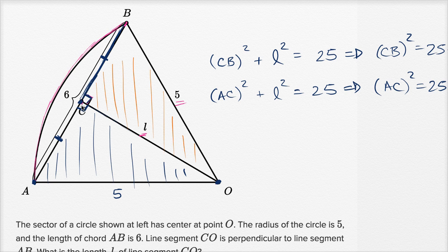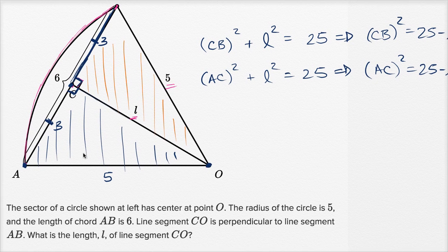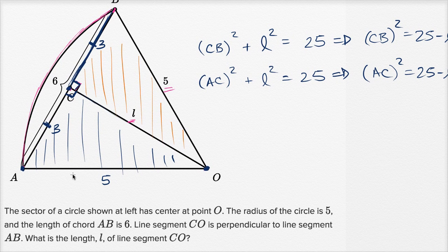And so AC is going to be half of the six, and CB is going to be half of the six. And now we can say with certainty, this is going to be three, and this is going to be three right over there. Now once again, you might have immediately jumped to that conclusion, and you would have gotten the question right.